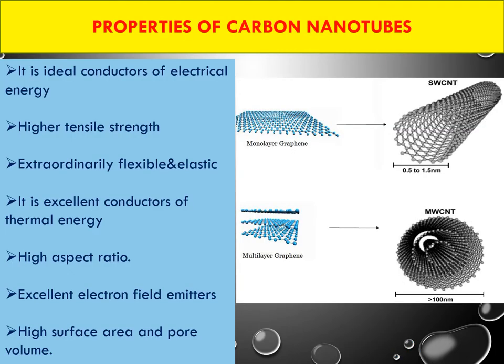Properties of carbon nanotubes: they are ideal conductors of electrical energy, have higher tensile strength, are extraordinarily flexible and elastic, and are excellent conductors of thermal energy. These properties arise because of their high aspect ratio. Aspect ratio means length divided by width — nanomaterials having micrometer length but nanometer width yield a very high aspect ratio number.